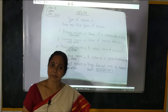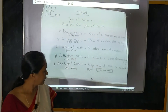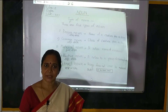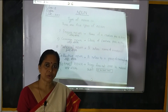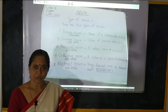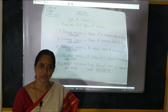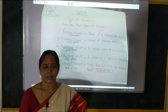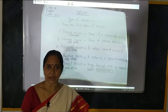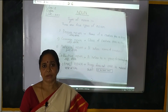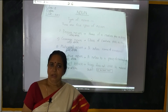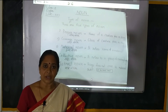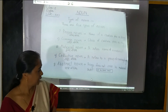Collective Noun — jis mein samuh ka bodh ho. Definition: It refers to a group of creatures or things. Creature matlab prani — insan bhi ho sakti hai, koi prani bhi ho sakta hai. Jaise is classroom mein aap sari baithe ho, baccho ka samuh hai — Class. Army: sena ke jawan, ek saath kaafi log sagatit ho kar sena ka nighatan karte hain — toh yay Army ho jayega Collective Noun. Yani chezon ka bhi group hota hai — jaise angoor ka guccha — toh yaya ho jayega Collective Noun, samuhvachak sanjya.